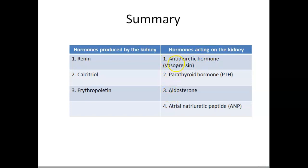The hormones that act on the kidney — there are four. The first is antidiuretic hormone, important in water reabsorption from the last part of the nephron. The second is parathyroid hormone, important in reabsorption of calcium, inhibition of phosphate reabsorption, and formation of vitamin D or calcitriol. The third is aldosterone, important in reabsorption of sodium and excretion of potassium. The last is atrial natriuretic peptide, which has the opposite action to aldosterone and is important in inhibition of sodium reabsorption. Thank you very much.